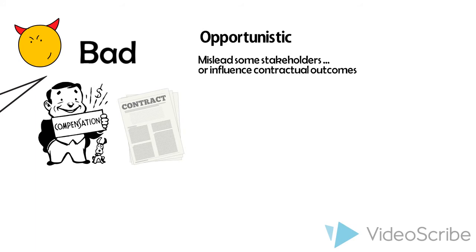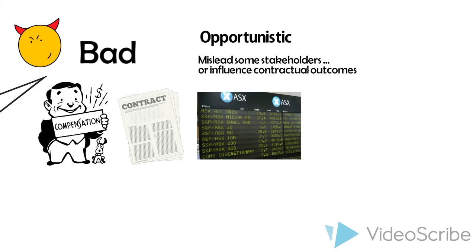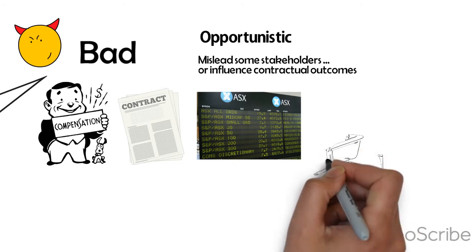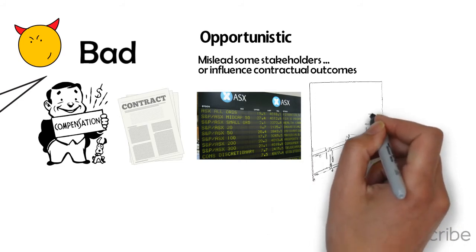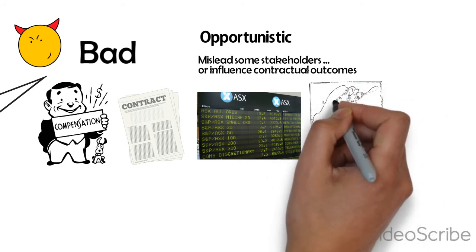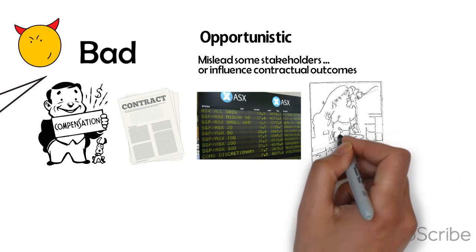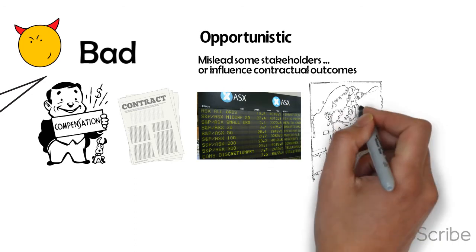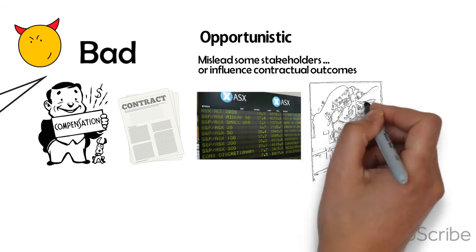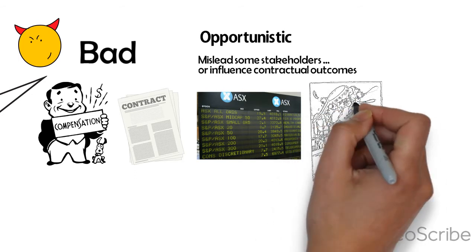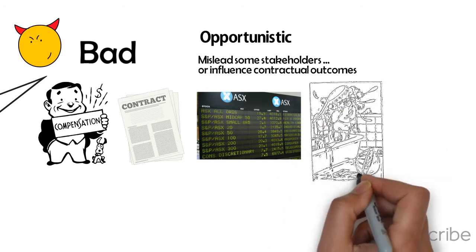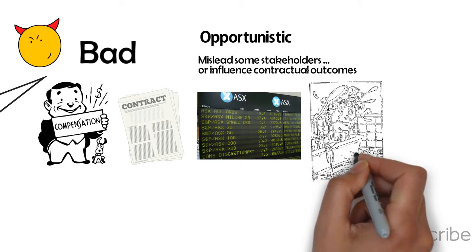Managers may also engage in earnings management to avoid breaching debt covenants, to increase share price or decrease share price, or to write off underperforming assets and reduce profit in a period where the blame can be placed on a past manager, restructuring, or some external event. Taking a big bath makes it easier to report a profit in the future and provides a lower benchmark to be compared against.